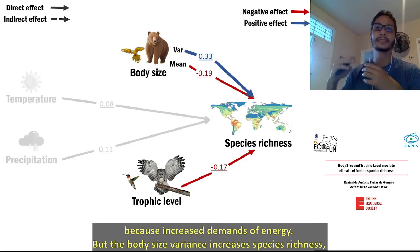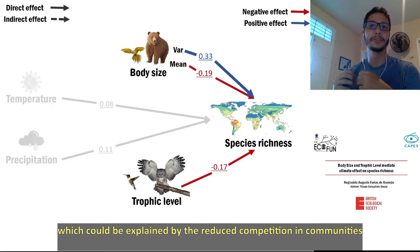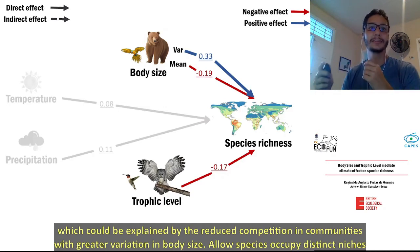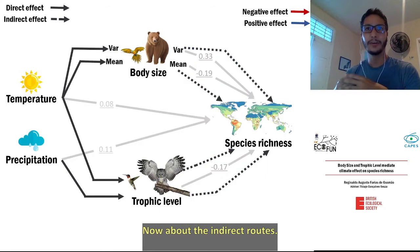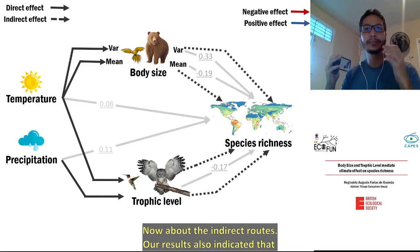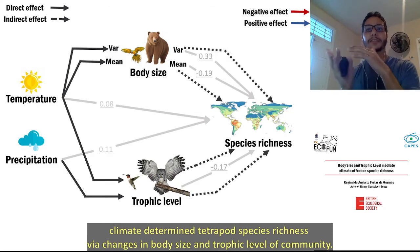But body size variance increases species richness, which could be explained by the reduced competition in communities with great variation in body size, allowing species to occupy distinct niches. Our results also indicated that climate determined tetrapod species richness via changes in body size and trophic level of communities.